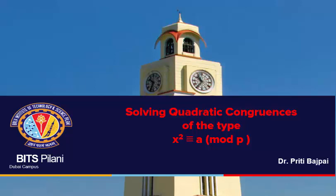Hi everyone. Today we are going to study solving quadratic congruences. There are many types of quadratic congruences. Here we are going to study the simplest type: X squared is congruent to A mod P, where P is some prime integer.